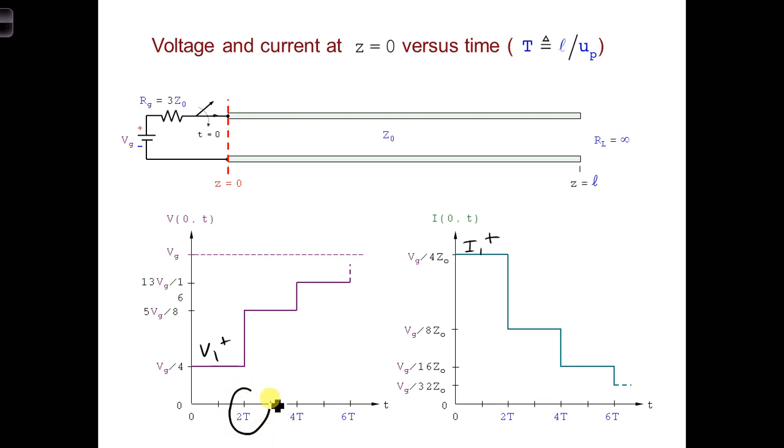And that is equal to two times capital T seconds. At two T seconds, the amplitude of the voltage wave at the generator becomes V1 plus, plus V1 minus.